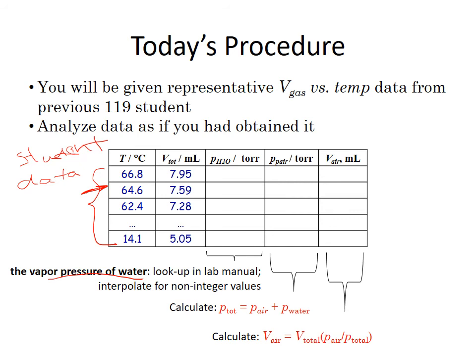Once you have the partial pressure of water, the vapor pressure of water, you're going to use this equation to calculate P air, the partial pressure of air. And once you have the partial pressure of air, then you can use Dalton's Law of Partial Pressures in order to calculate V air. So first two columns are the simulated measured data. Middle column, you look up in your lab manual with the notation that you're going to interpolate. And then the last two are things that you calculate.